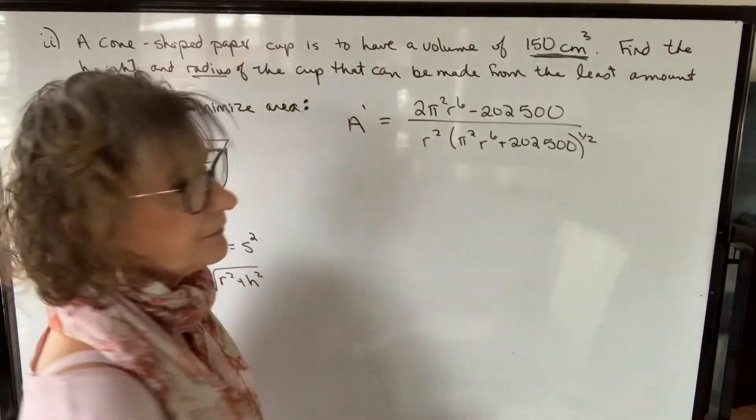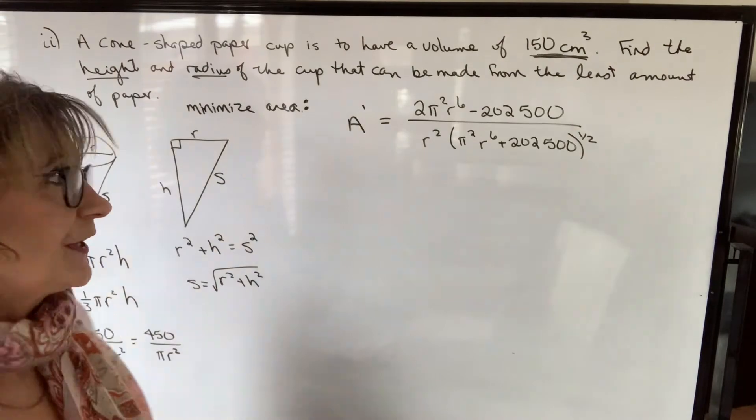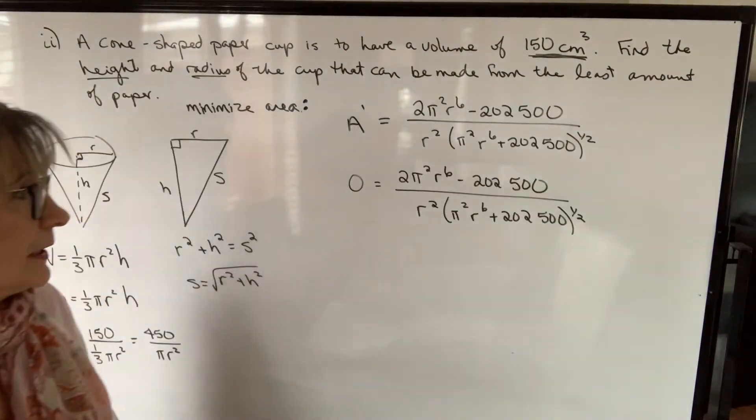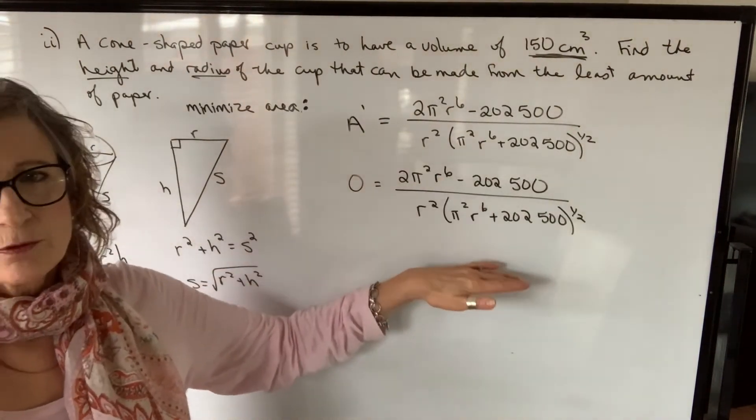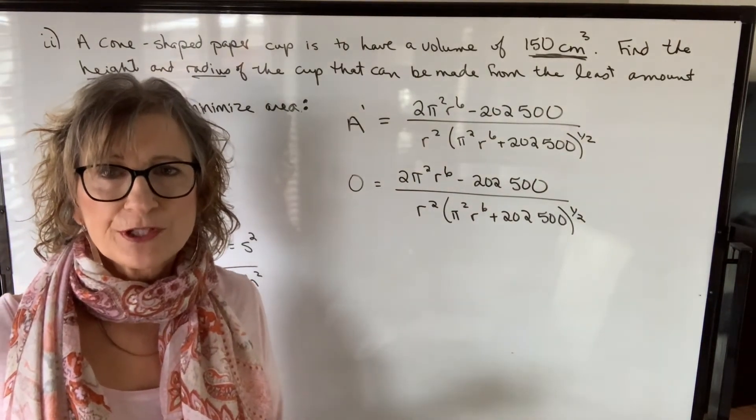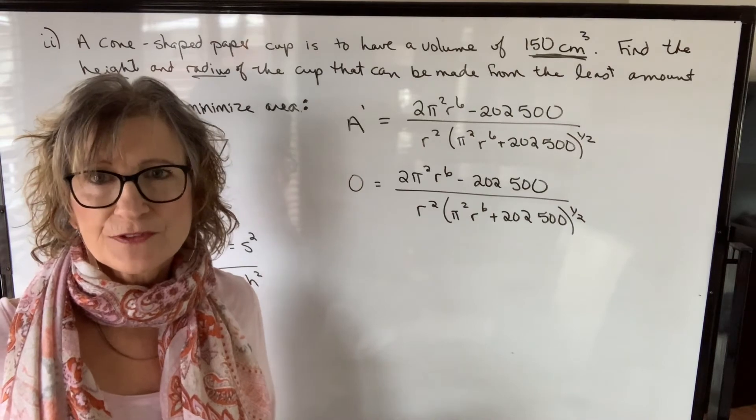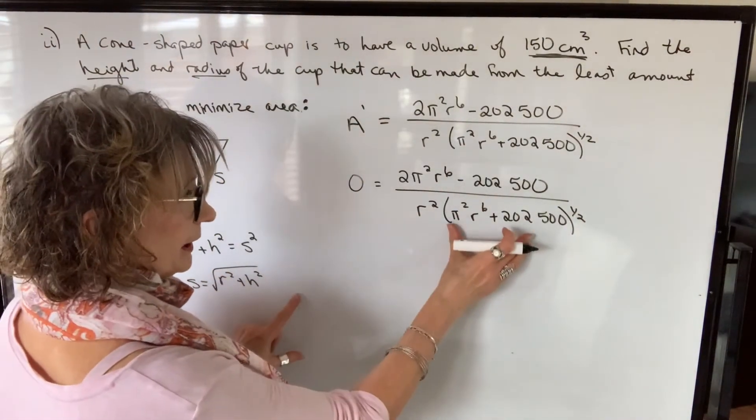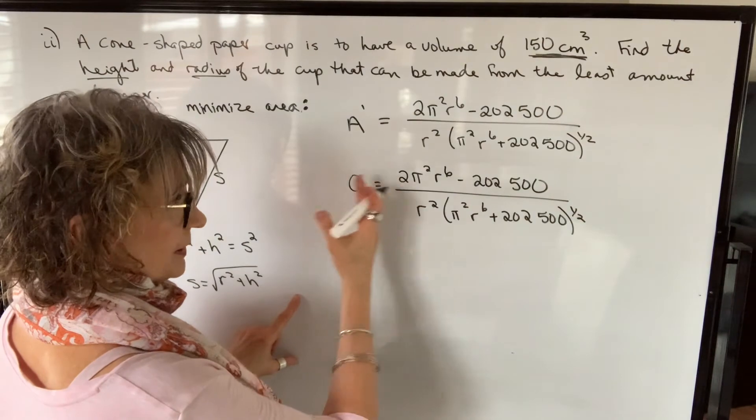So this is my simplified derivative of area, and I'm going to set this equal to zero. When you have a fraction equal to zero, the only way that that fraction can equal zero is if the numerator equals zero, because the denominator cannot equal zero or it's undefined.